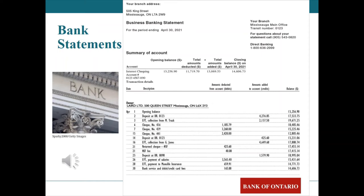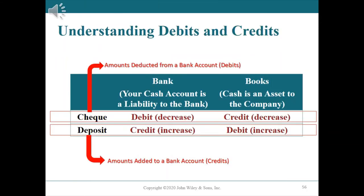Understanding debits and credits. While cash is an asset account for the company, to the bank, the funds it holds are a liability because the company can request them at any time. Liabilities are increased by credits and decreased by debits. When a company deposits money, the bank's liability to the company increases. When a company writes a check or makes an electronic payment, the bank decreases or debits its liability to the company.